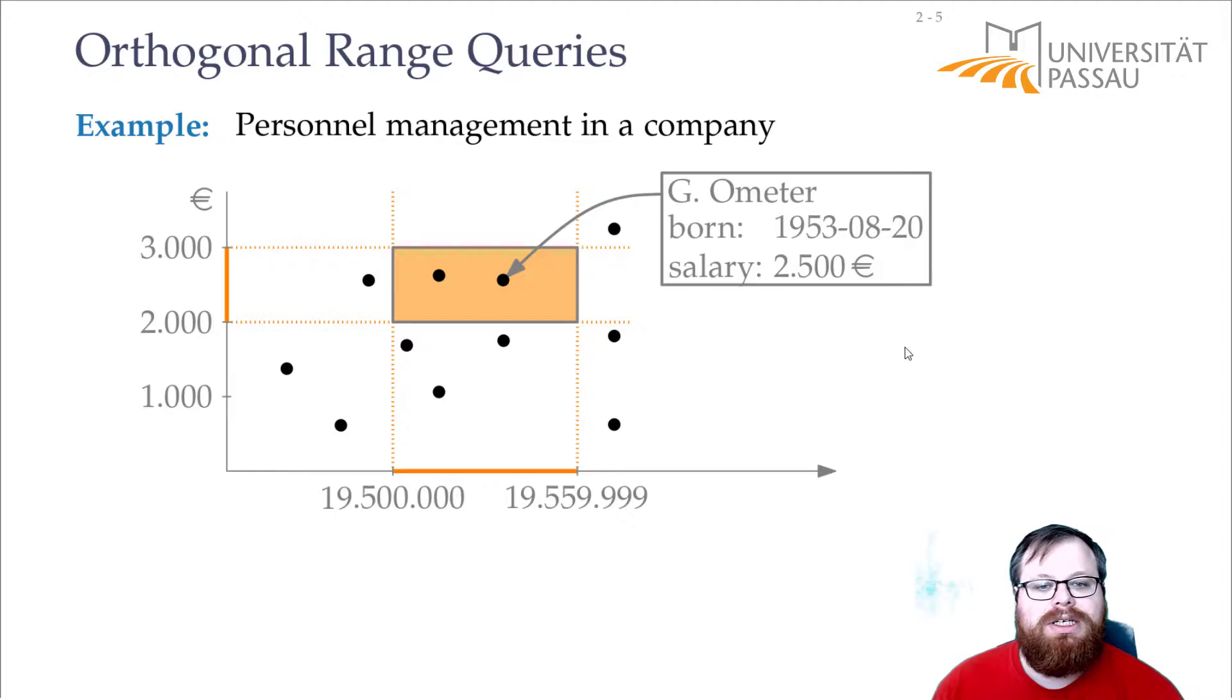And these are orthogonal queries because each of those regions is just a strip that's orthogonal, so it has a horizontal and a vertical boundary.